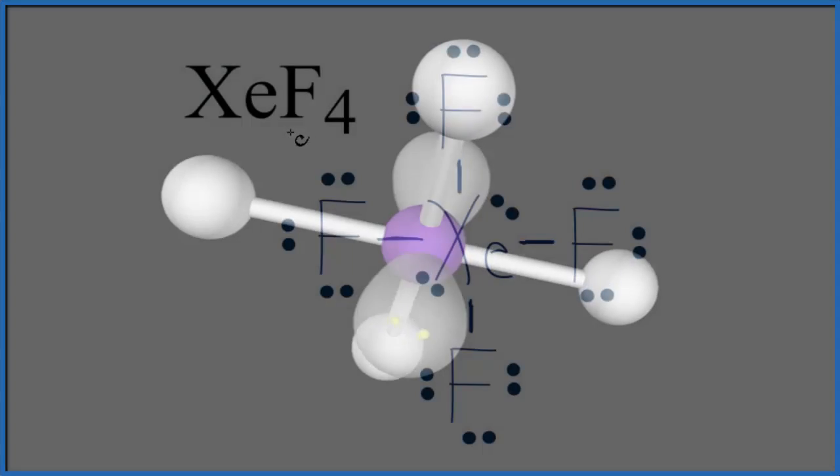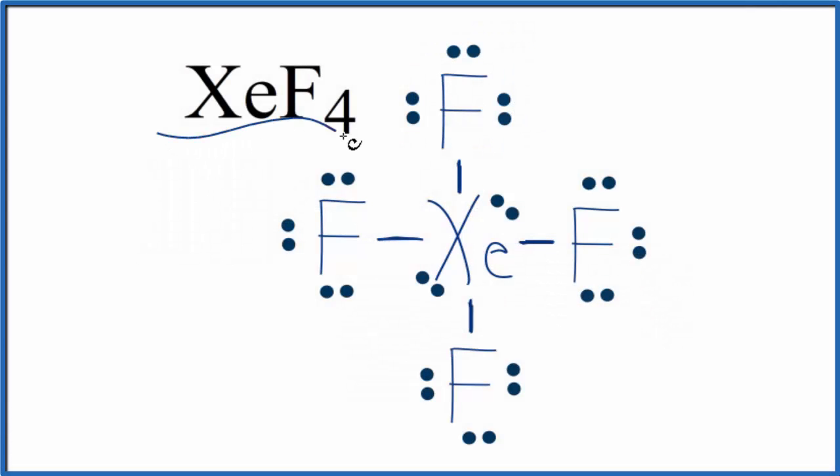Back to our Lewis structure. We can say that in xenon tetrafluoride, the bonds between xenon and fluorine are polar bonds. But overall, the molecule is symmetrical, so the dipoles cancel out. Overall, XeF4, xenon tetrafluoride, is a nonpolar molecule. This is Dr. B. Thanks for watching.